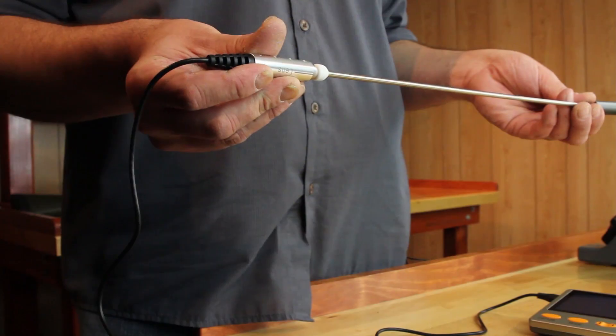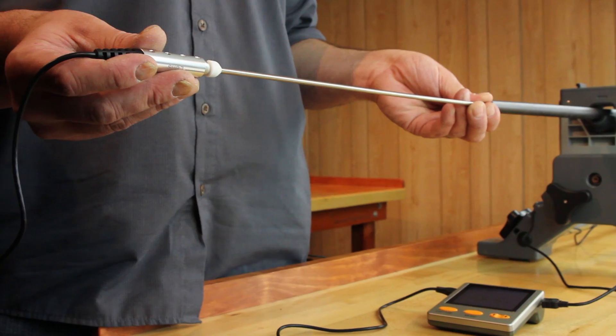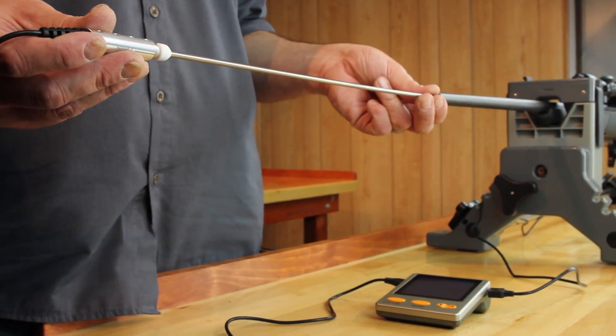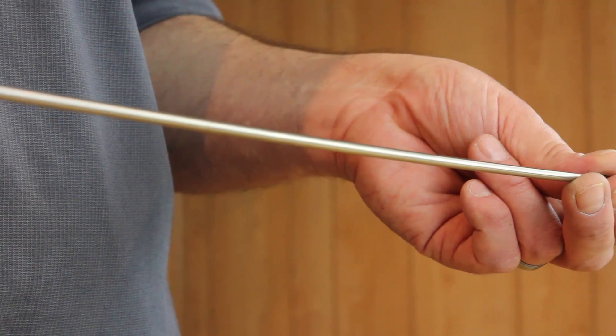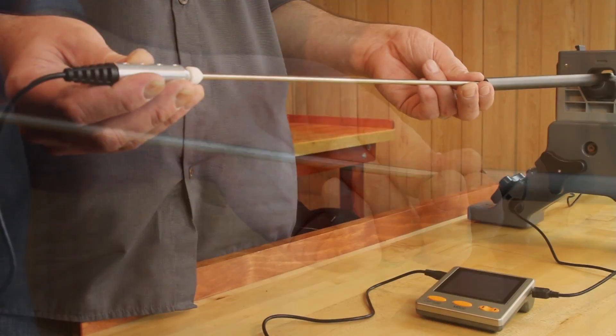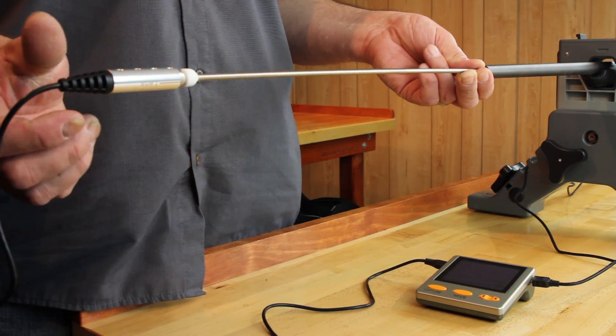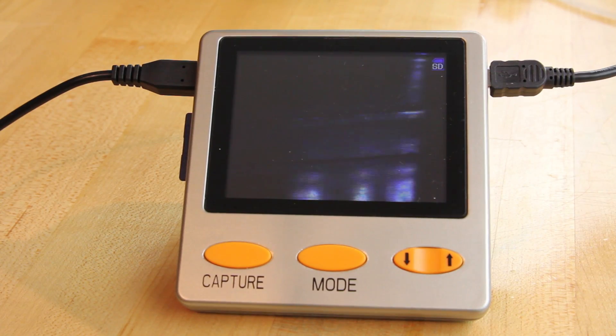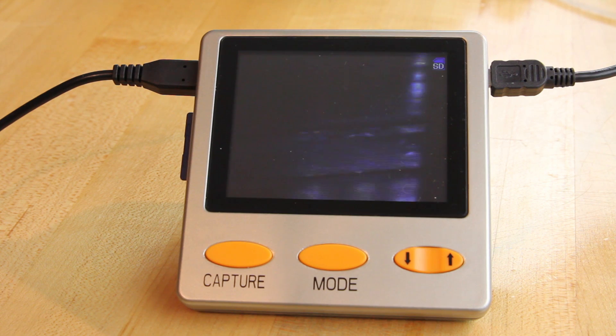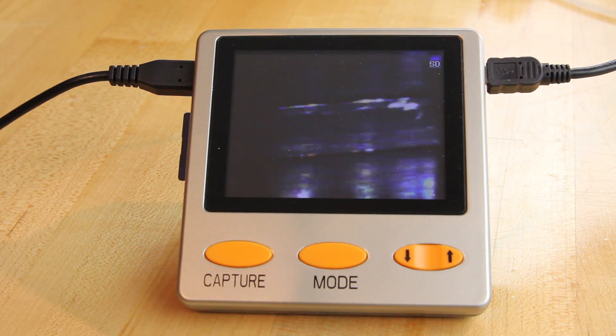Once you have located something in the barrel chamber throat, the Lyman Bore Cam will take a picture and save it to the SD card provided so that you can review them on the monitor or a computer at a later time. In order to take a picture, get the wand positioned so that it gets the best possible view of the area in question and press the capture button on the monitor. You may also want to jot down the inch designation and lens orientation so you can find that area again if need be.